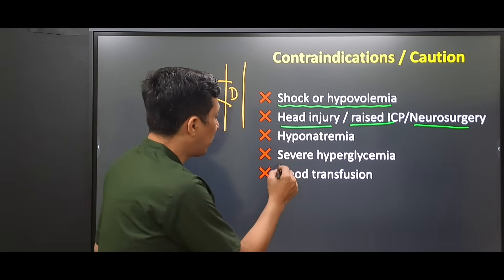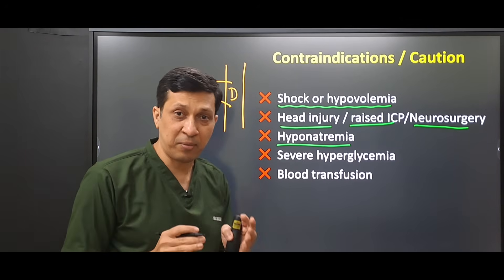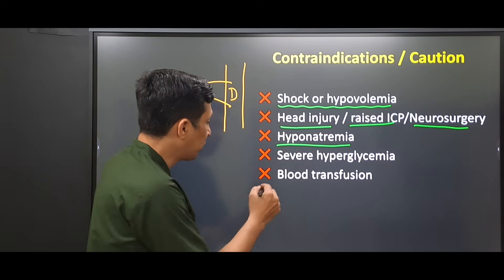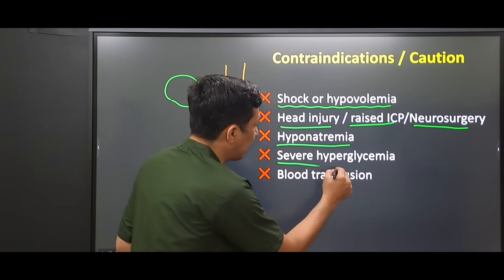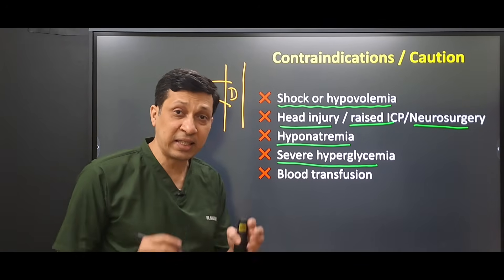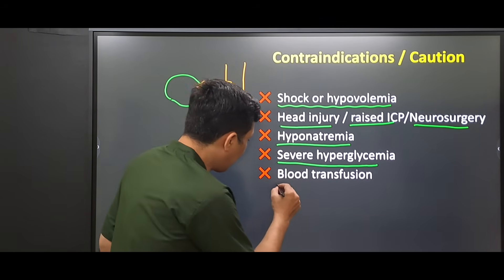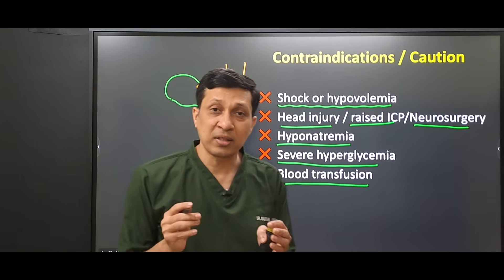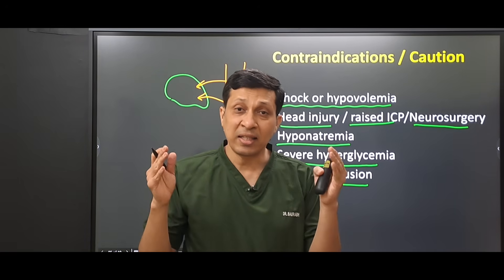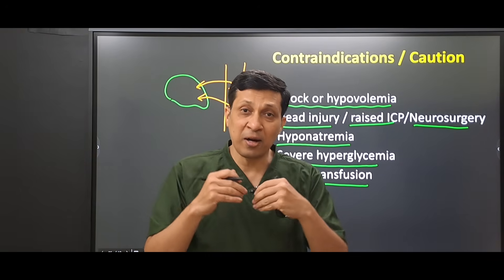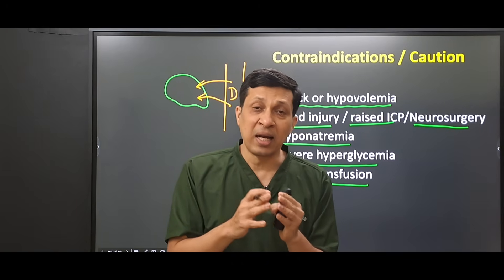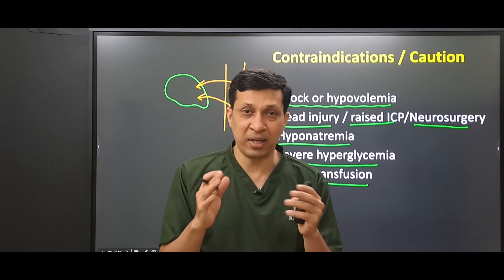It is also contraindicated in hyponatremia because it will aggravate this condition more. It is also not useful or contraindicated in severe hyperglycemia because it contains dextrose. And it is also not to be given with blood transfusion because it is a hypotonic fluid and will enter into the RBCs which will swell and ultimately cause hemolysis. So whenever you are giving blood transfusion and dextrose, they should not be given in the same line.